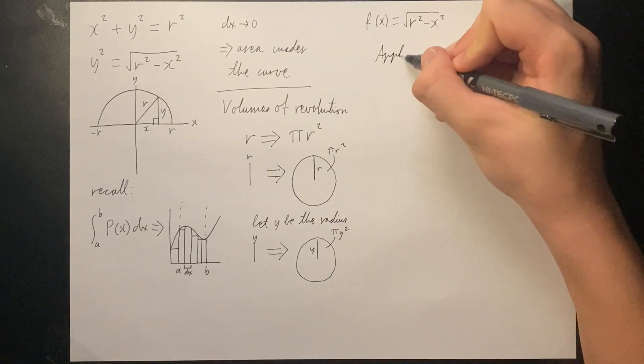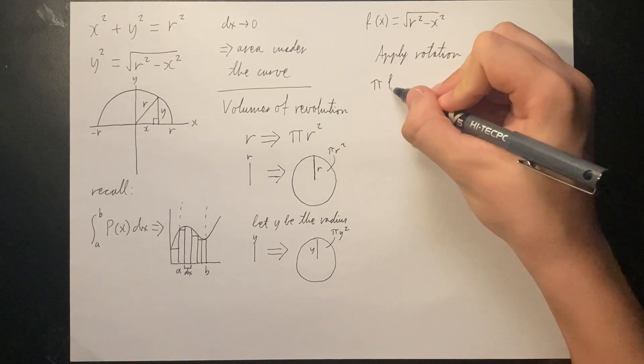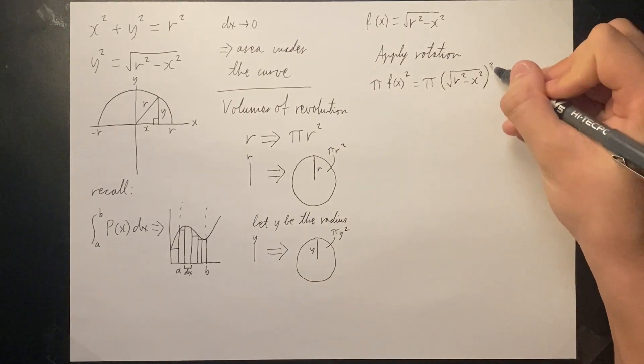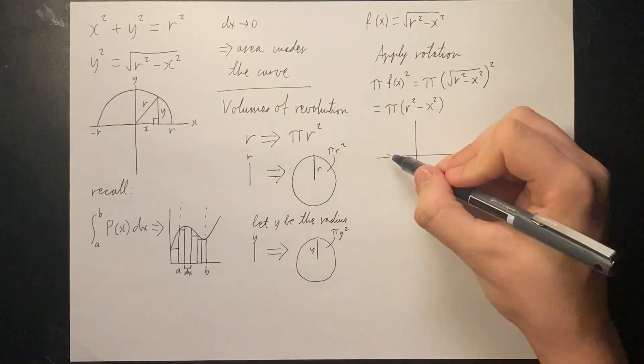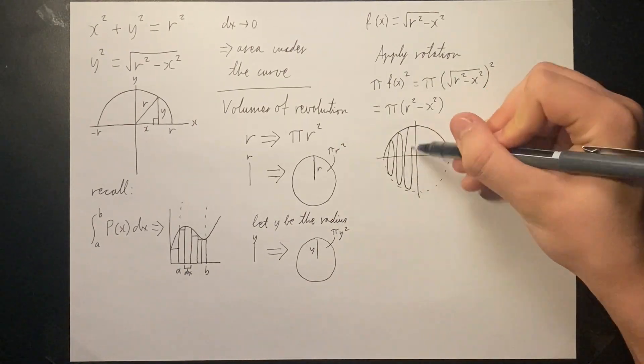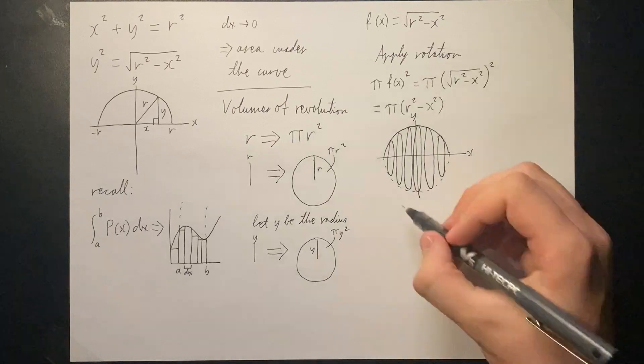If we apply the rotation, we get the following function where each value returned by the function will now represent the area of a circle with a radius f of x. If we multiply the area of the circle by some value, say dx, we get the volume of a cylinder.